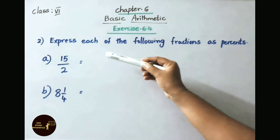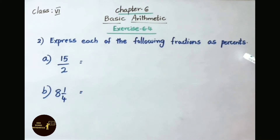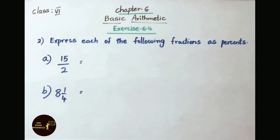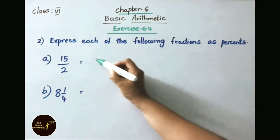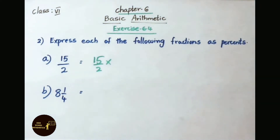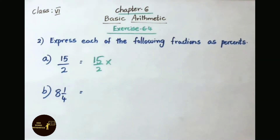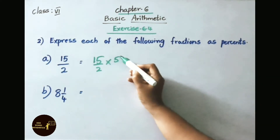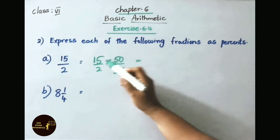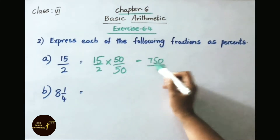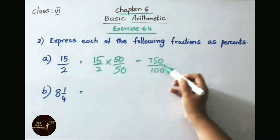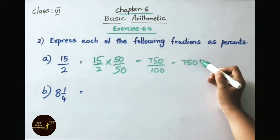Question 2: express each of the following fractions as percents. Question A: 15 by 2. To convert this fraction to a percentage, we need the denominator to be 100. To get denominator 100 from 2, we multiply by 50. So 15 into 50 is 750, and 2 into 50 is 100. Therefore 750 by 100 can be written as 750 percent.